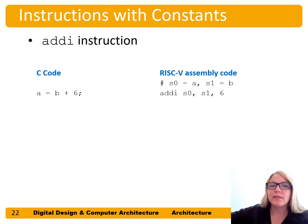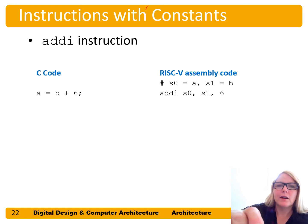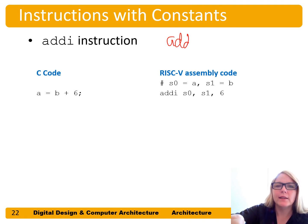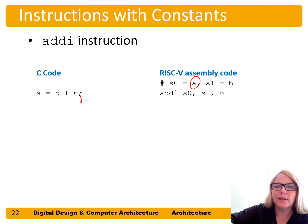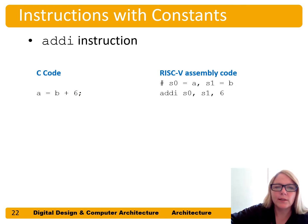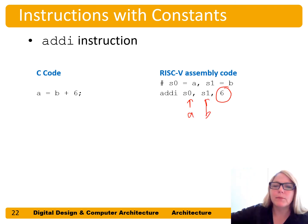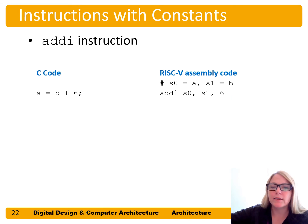We also have instructions with immediate or constant operands. Here's the add immediate instruction, ADDI — the I stands for add immediate, meaning we add a constant. If we want to do a = b + 6, we still have a in s0 and b in s1. We write: addi s0, s1, 6. That immediate operand is a 12-bit signed constant.